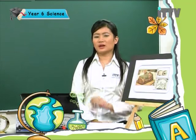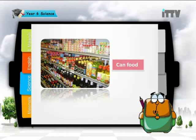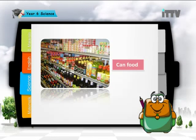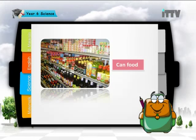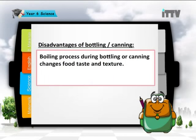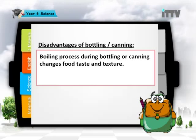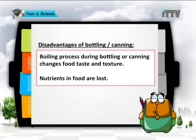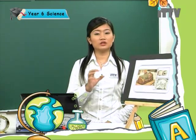In the supermarket you can observe many different kinds of canned and bottled food — canned tuna, bottled ketchup, bottled soy sauce, canned sardine, canned meat, and many more. The disadvantage of bottling and canning is that the boiling process changes the food's taste and texture, and high temperature also causes the nutrients in food to be lost.